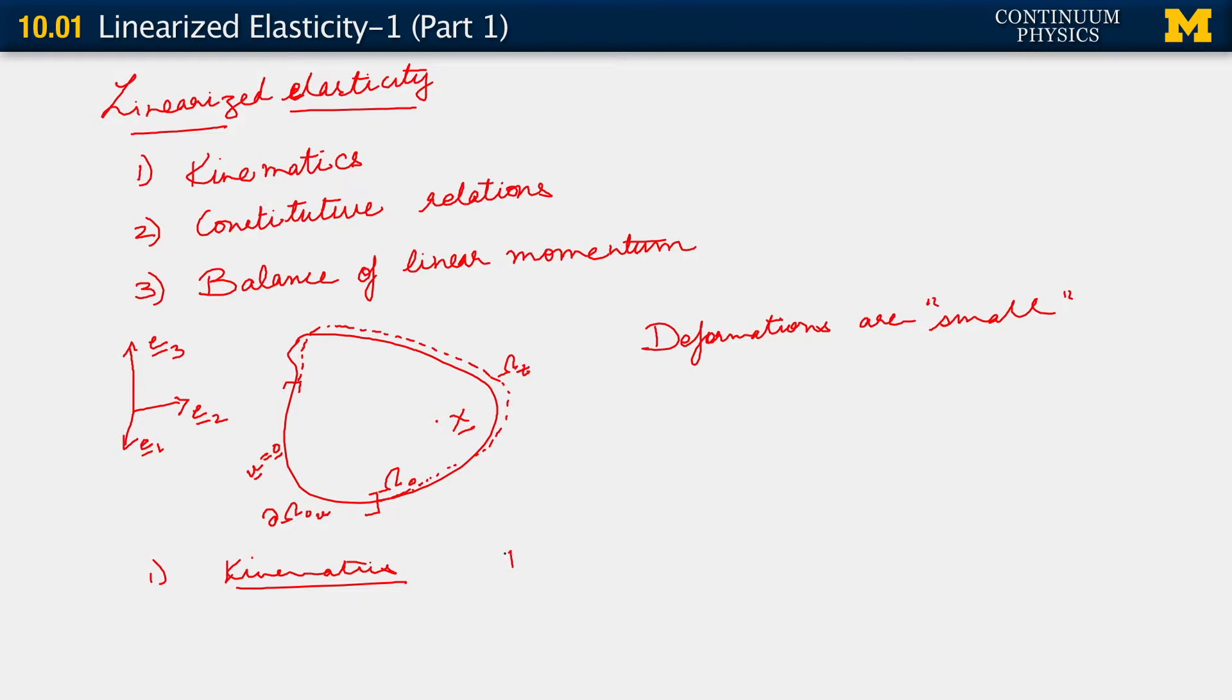As always, we have the deformation gradient F, which is partial of phi with respect to x. And just to make things clear, what we're seeing here is that this little vector is u. That field, that's our u field.